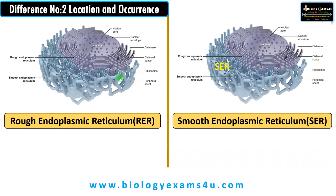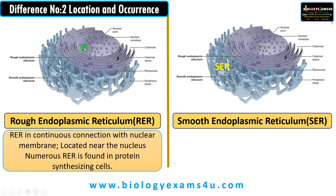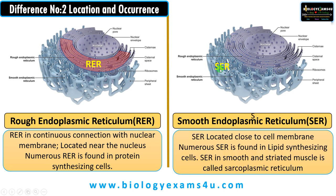Difference number two regarding location and occurrence. Rough endoplasmic reticulum is in continuous connection with the nuclear membrane, located near the nucleus and studded with ribosomes. As ribosomes are present on RER, its function is protein synthesis, so RER is abundant in protein-synthesizing cells. SER is located close to the cell membrane, and numerous SER is found in lipid-synthesizing cells like oil glands of the skin. In smooth and striated muscle, SER is called the sarcoplasmic reticulum.